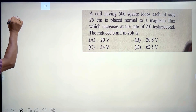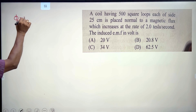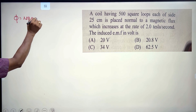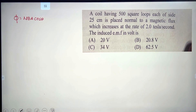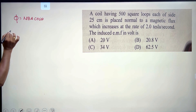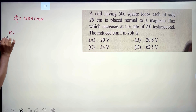The formula is flux equals N·B·A, that is N·B·A·cos(theta). Here theta is zero since the coil is placed normal to the field. Now we look at the formula for induced EMF.